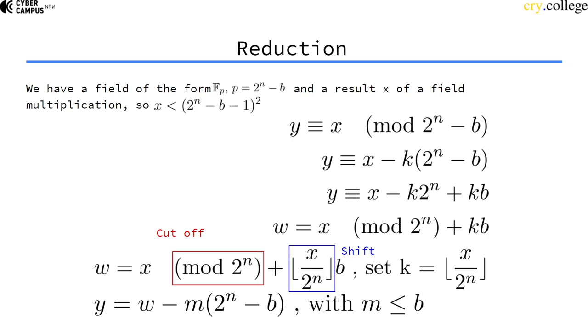Dividing by a power of two actually means nothing else than just shifting. So dividing by 2^n is a right shift by n bits of x.